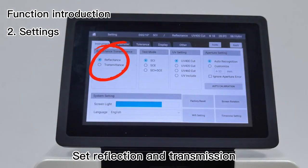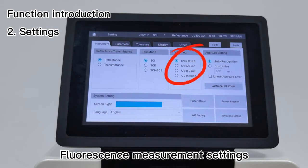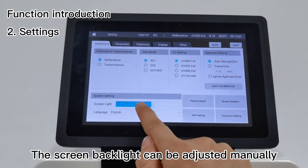Set reflection and transmission, set SCI and SCE mode, fluorescence measurement settings, and caliber setting. The screen backlight can be adjusted manually.